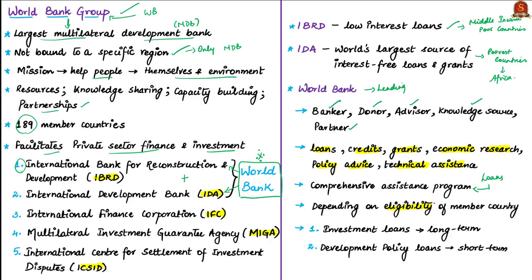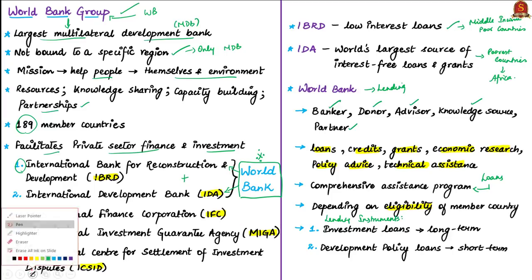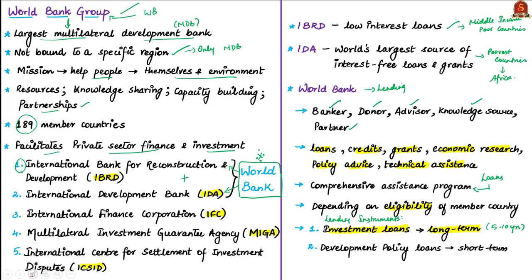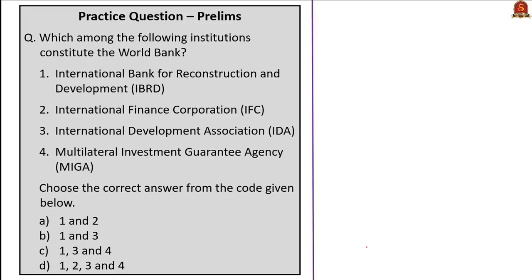The World Bank offers two basic types of lending instruments: investment loans and development policy loans. Investment loans are for long-term projects, usually five to ten years. Development policy loans have a short-term focus of one to three years and are provided immediately as an external financing measure; they support policy and institutional reforms of central and state governments. Kerala is aiming to receive financing under this development policy loan. With this, we come to the end of the analysis of this news article.